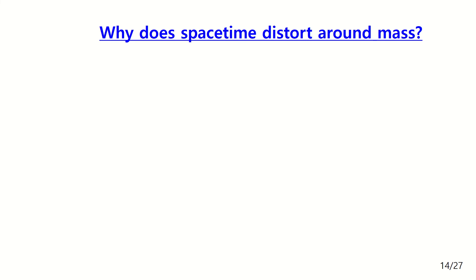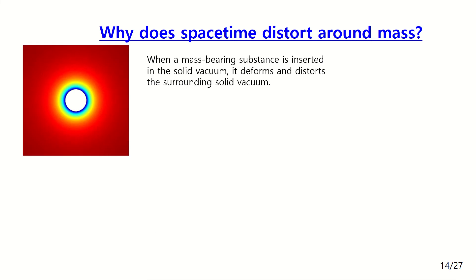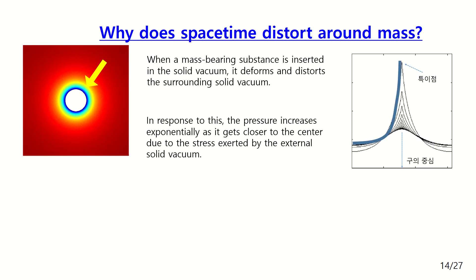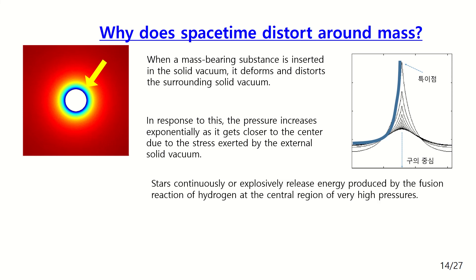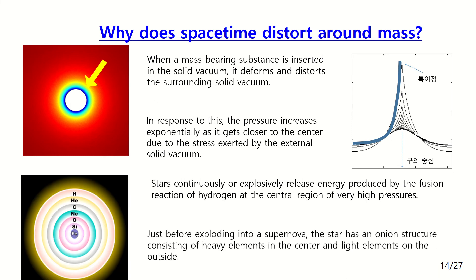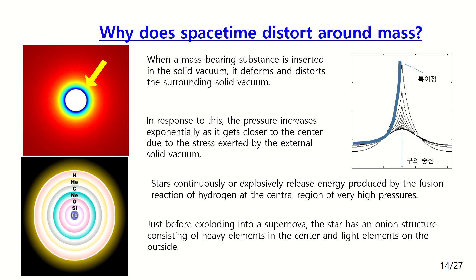Let's start. Why is space-time distorted around mass? It is very simple. When a mass-bearing object is inserted in a solid vacuum, it deforms and distorts the surrounding solid vacuum. In response, the pressure inside the object increases exponentially as it gets closer to the center, due to stress exerted by the surrounding solid vacuum. Stars continuously or explosively release energy produced by their hydrogen fusion reaction at the central region of very high pressure. Just before exploding into a supernova, the star has an onion structure consisting of heavy elements in the center and light elements on the outside.